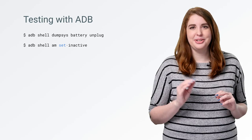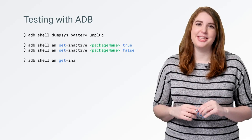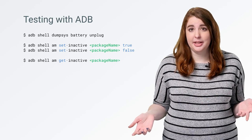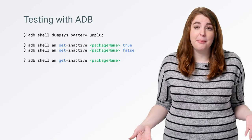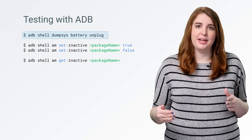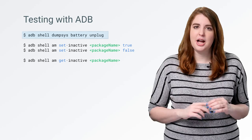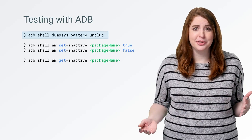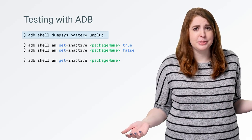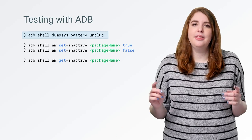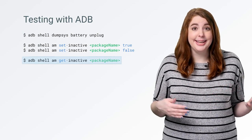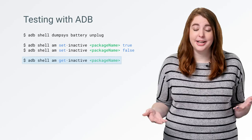To help you, we created a new ADB service that will let you toggle in and out of App Standby. You need a device or an emulator running Marshmallow, then open your app and leave it running. To force your app into App Standby, you first need to instruct the device not to pull any power from the cable connecting it to your computer, because being plugged in means we aren't worried about battery anymore. Then use Set Inactive True or False to toggle into or out of App Standby, and Get Inactive will let you check the current state.